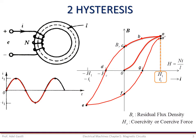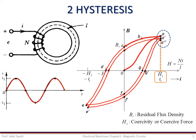Notice that the loop does not close. If H is varied for another cycle, the final operating point will be A''. Again, notice that the loop does not close. However, the operating points A' and A'' are closer together than points A and A'. After a few cycles of magnetization, this loop almost closes, and it is called the hysteresis loop.